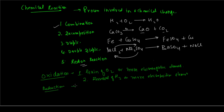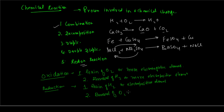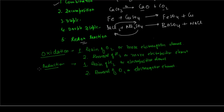Next, we come to reduction — the exact opposite of oxidation — where there is gain of hydrogen or a more electropositive element, or removal of oxygen or a more electronegative element. And a redox reaction is a reaction in which reduction and oxidation take place simultaneously. Where these two come together, you have a redox reaction: oxidation plus reduction equals redox reaction.